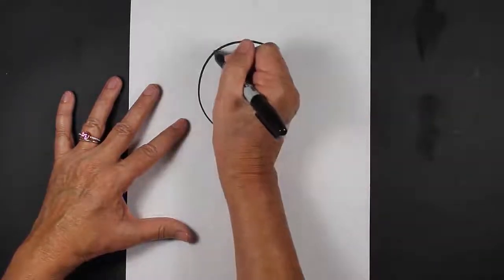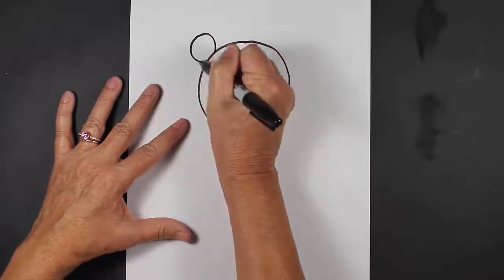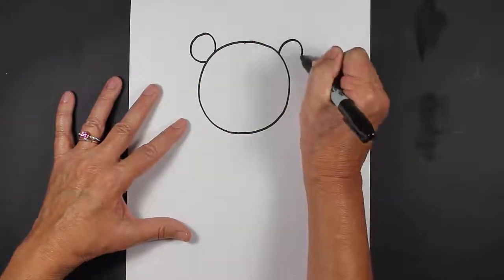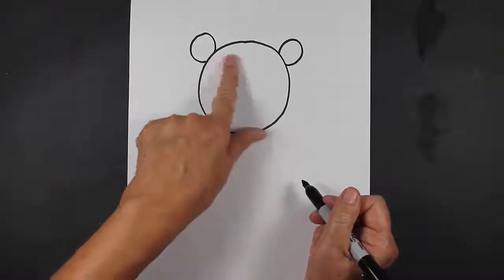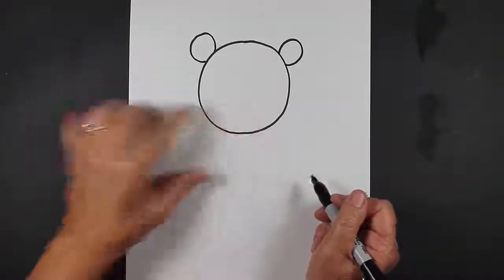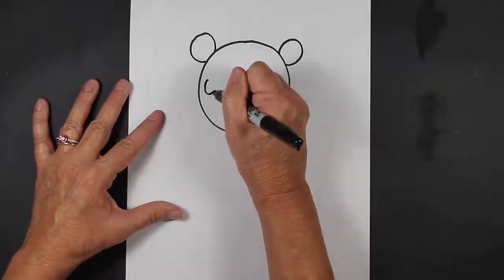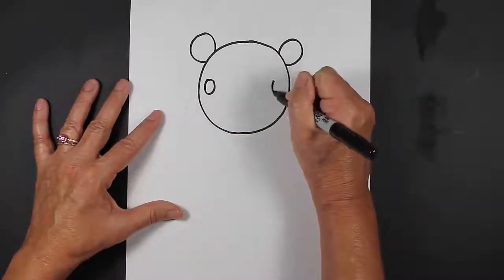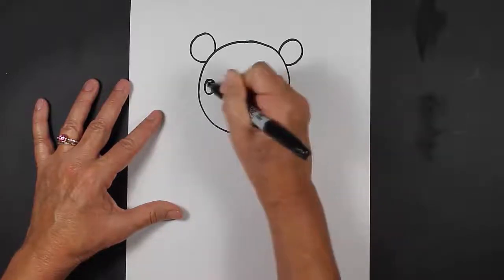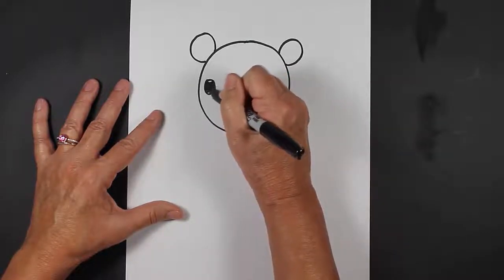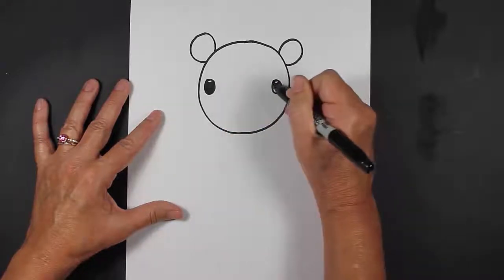The next step is we're going to make some ears coming off of your head, and then inside of our teddy bear's face, we're going to make some wide set eyes. Those are eyes that are pretty far away on the piece of paper. They're not super close together.